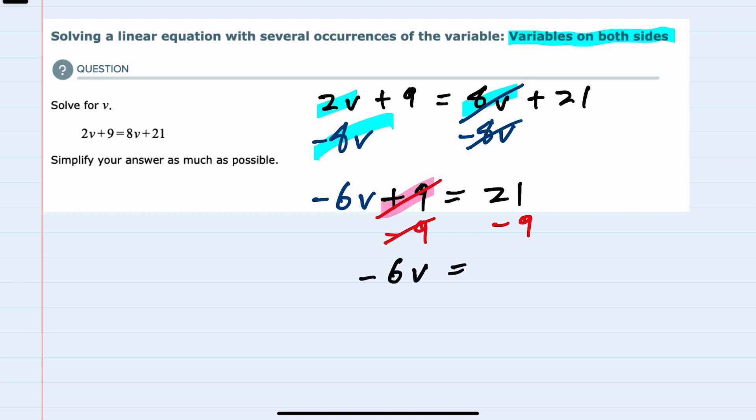And on the right-hand side, I now have 21 minus 9, or 12. And then, in one more step, I can isolate the V. Since I now have minus 6 times V, I can undo that by dividing each side by minus 6.